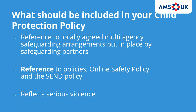Your policy should include reference to locally agreed multi-agency safeguarding arrangements put in place by safeguarding partners — this is where your local authority template is useful, as local procedures differ from borough to borough. You also need to ensure there is reference made to your online safety policy and your SEND policy in your child protection policy. A reference to your behaviour policy would also be good practice, as well as your anti-bullying policy, because they all interlink in one way or another and all fall under safeguarding.